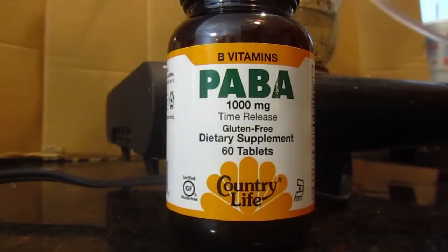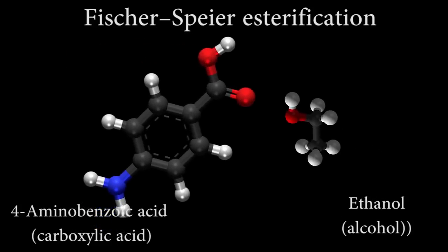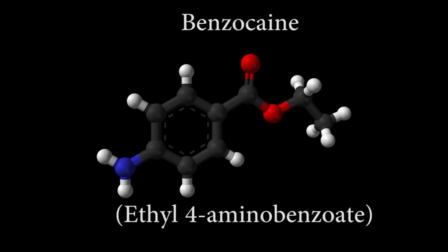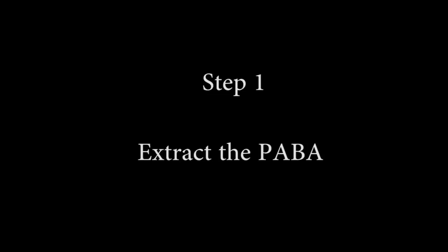And we're starting with PABA, para-aminobenzoic acid. It's a health food supplement or something, anyway. We're doing a Fischer esterification, which is between an acid, carboxylic acid, and an alcohol, ethanol, kind of like my other isopropyl nitrite video, same thing, we're using a catalyst of sulfuric acid.